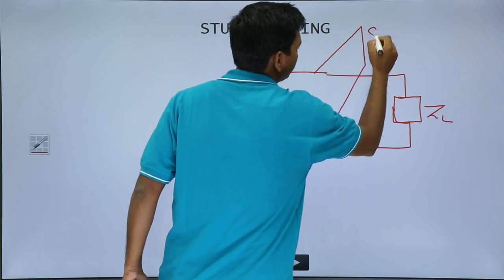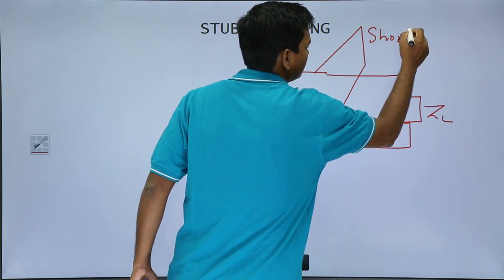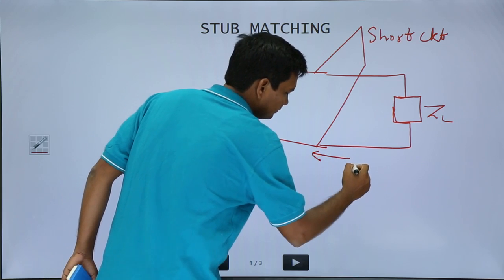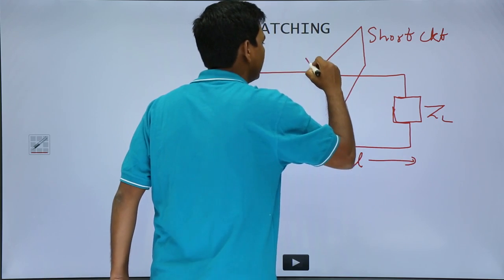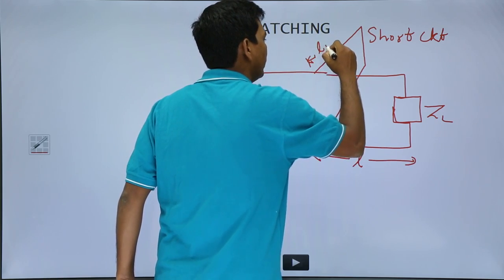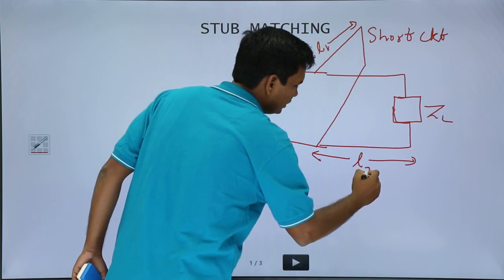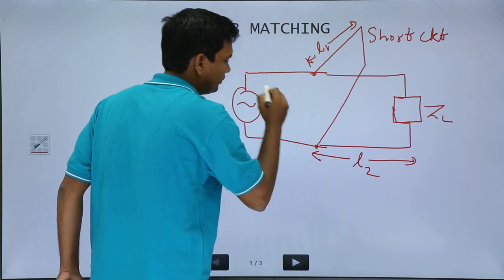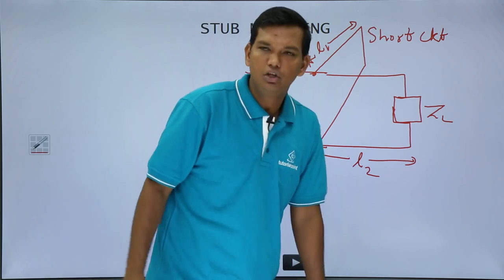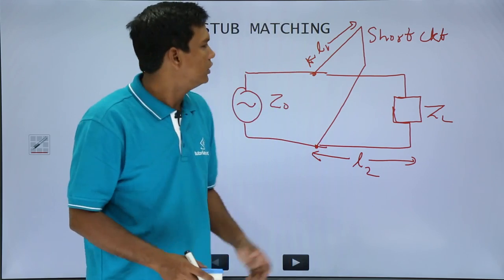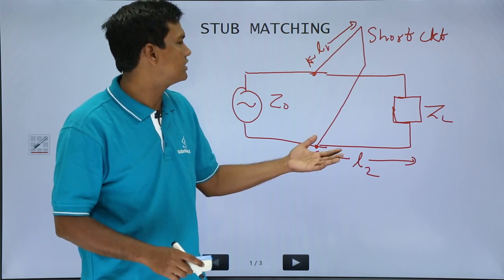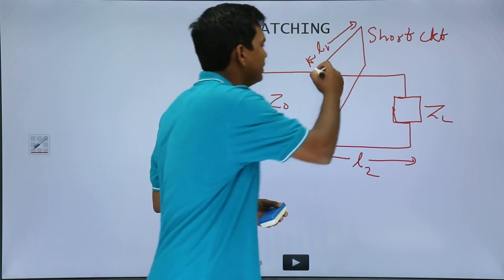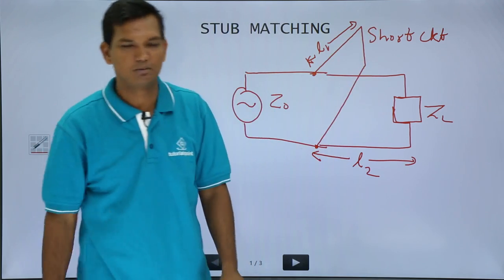This is nothing but a short circuit stub. Let us say this is some length L, and let us say this is some length L2. This is my Z₀. The whole purpose is to match the complex impedance, and this is called single stub matching because there is a stub here which is a short circuit — this is the stub, and it is a single stub.